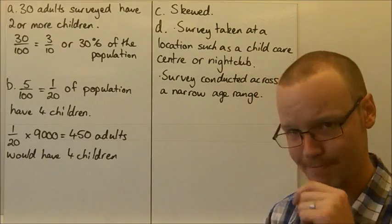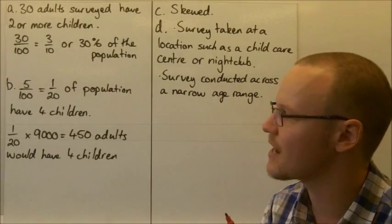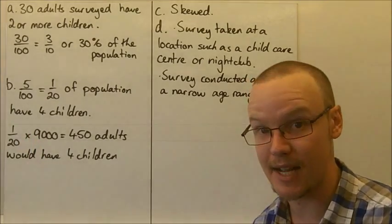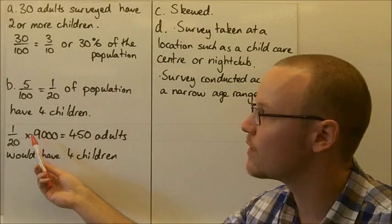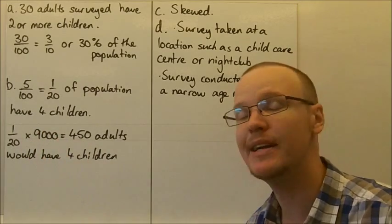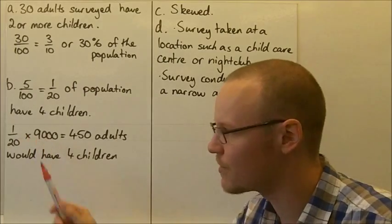So if we have a bigger population, 9,000 people we're looking at now in a group of 9,000 adults, we can find the number that would have that same proportion. If we assume that it's the same proportion of the 9,000, we can multiply and find one-twentieth of 9,000, so one-twentieth times 9,000.